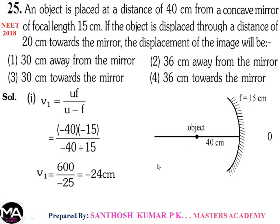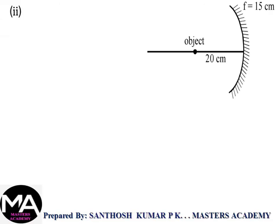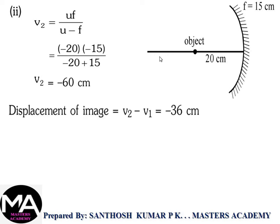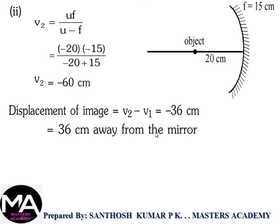Initial image at 24 cm, final image at 60 cm. Displacement of image = 60 − 24 = 36 cm. The image moves 36 cm away from the mirror. Therefore option 2: 36 cm away from the mirror.